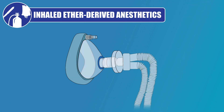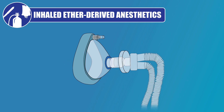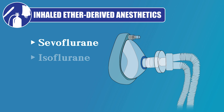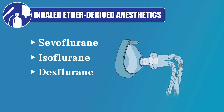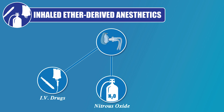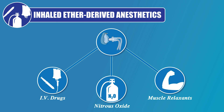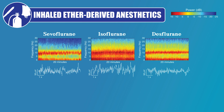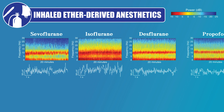In this video, we will be discussing the EEG pattern for anesthesia with inhaled ether-derived anesthetics such as sevoflurane, isoflurane, and desflurane. In practice, these inhaled anesthetics are rarely used alone. They are commonly used in conjunction with intravenous drugs, nitrous oxide, and muscle relaxants to provide balanced general anesthesia. This will be a shorter video, as we already generally know the characteristic EEG pattern for the inhaled ether-derived anesthetics, since it is very similar to propofol's.